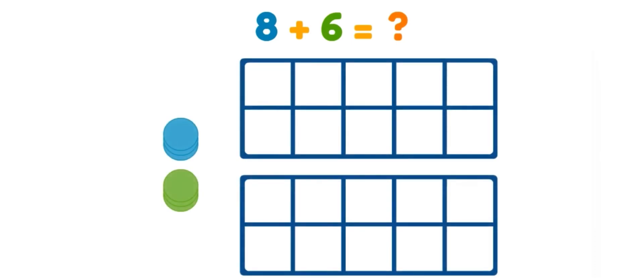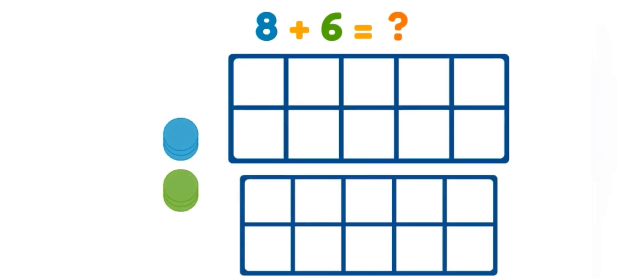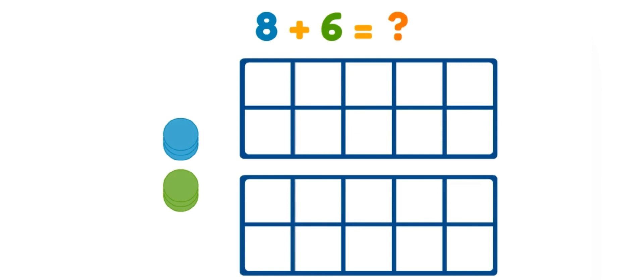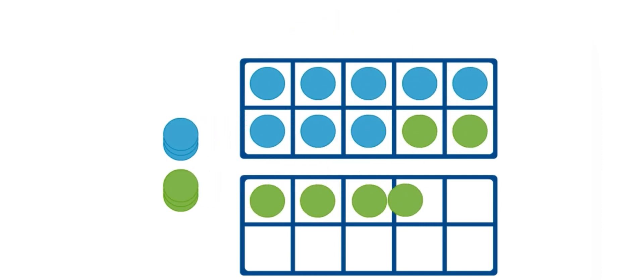What is eight plus six? Let's use a ten frame to figure it out. This is a ten frame because ten dots fit inside. Let's move the dots from the equation into the ten frame. Let's put eight in here. And only two more can fit! We have ten! And four singles. Ten plus four is fourteen!